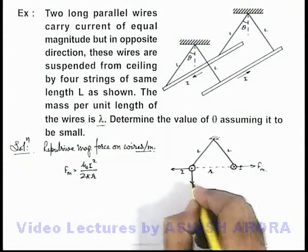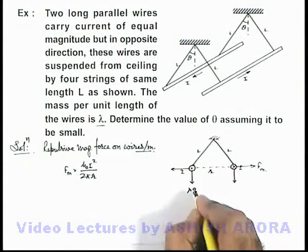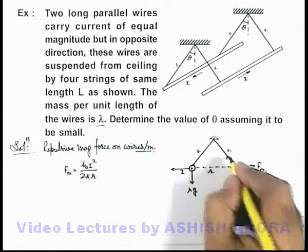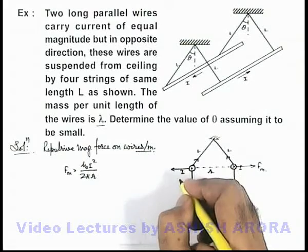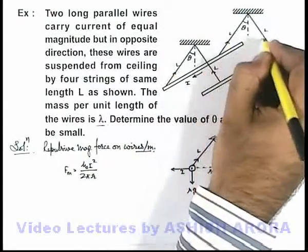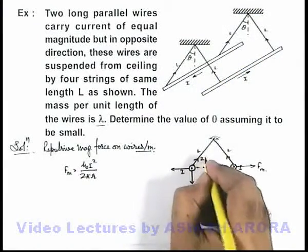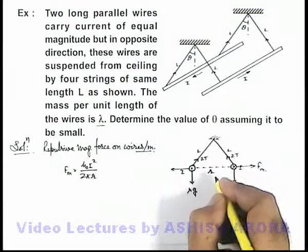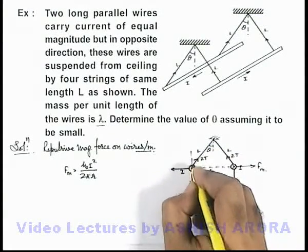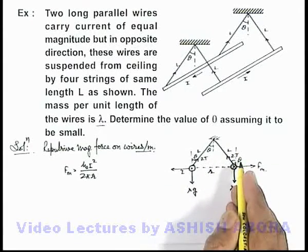So in downward direction it will experience its weight, it will be lambda g, because we are talking about per unit length. The string will carry out tensions t and t. If both of these strings will experience a tension t, we can write in this direction it will be 2t. If this angle is theta, this will also be theta, that is the angle made by string from the vertical.